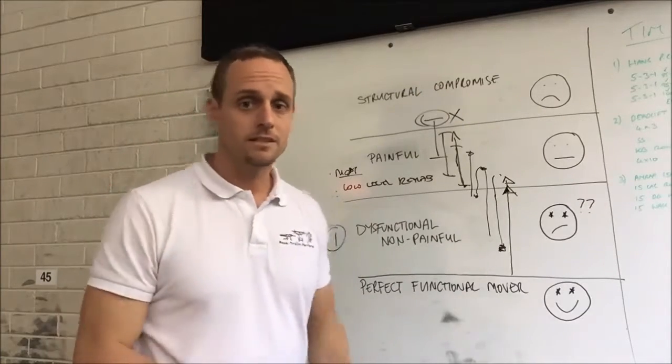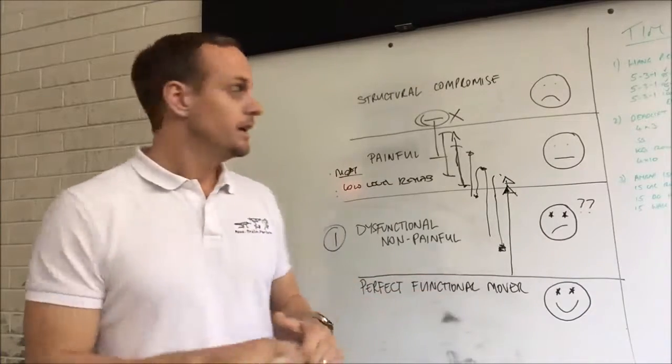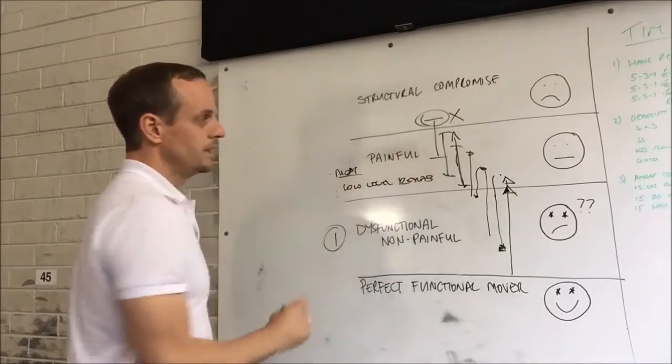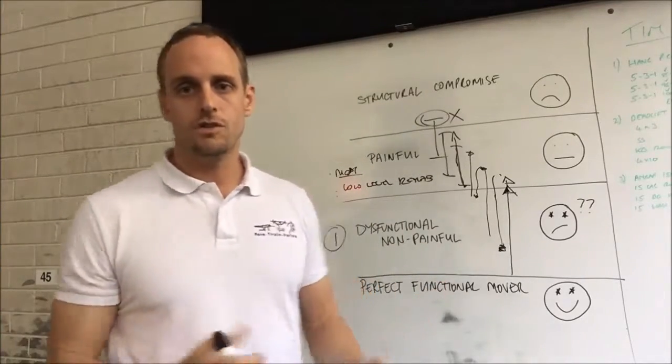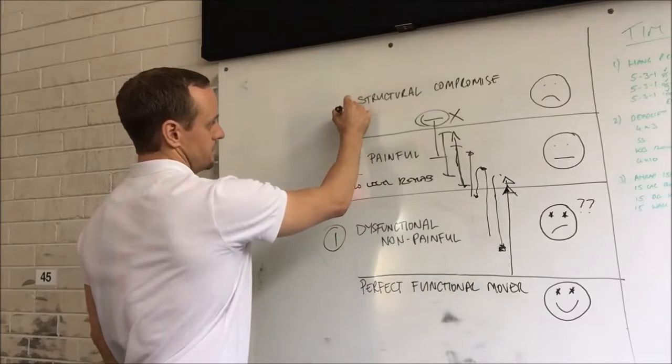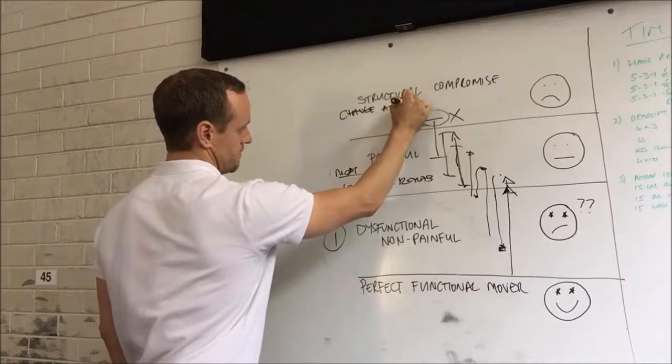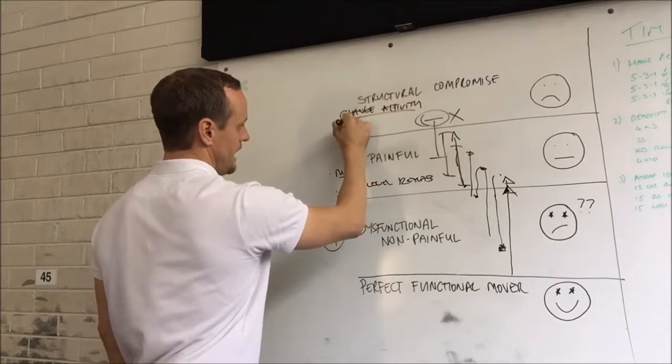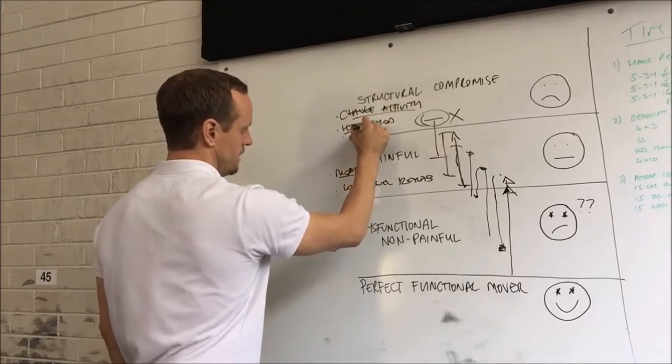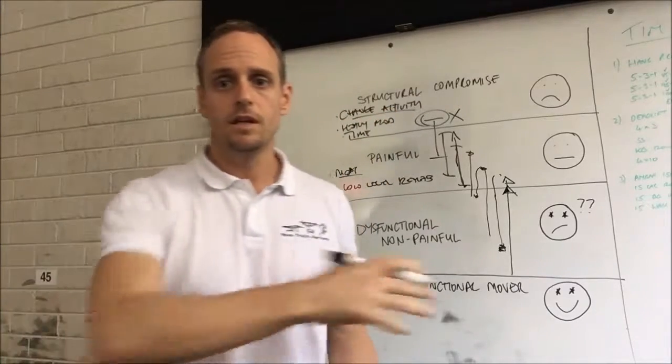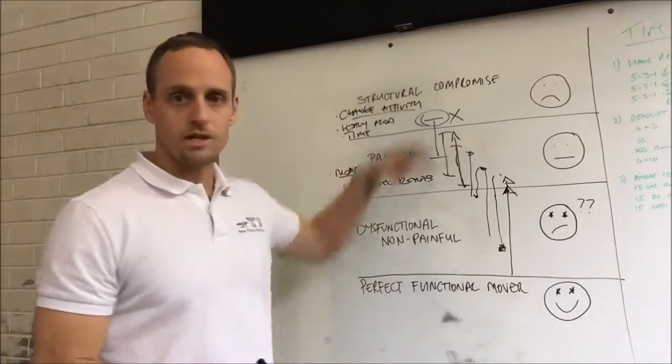Something tears, something strains, something sprains, and you have an injury. This is where everybody's unhappy. Here, there's no low level rehab. There's not just a little bit of modification. Once you're injured, you're injured. You have to let the tissue heal. This is really changed activity, heavy modification and time. You have to give yourself time to heal. The body has to heal. It can't just miraculously change overnight once you've had a structural compromise.